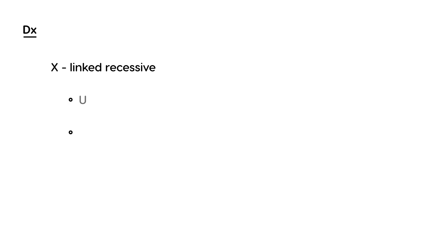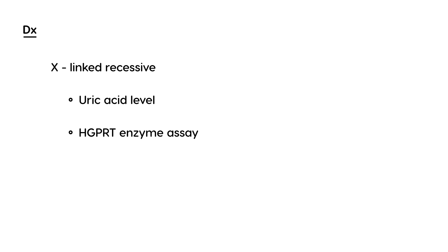Diagnosis is difficult because it's such a rare condition. It's an X-linked recessive disorder — that's the genetics involved. Fortunately, there are ways to test for it. The first is a simple uric acid level, which is easy to do. There's also an assay to check the HGPRT enzyme, which will give you the percentage of the enzyme that's still working and give you an idea of the deficiency.